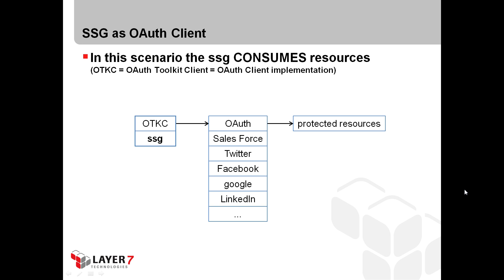If the gateway should consume an OAuth-protected resource, this can be implemented using the OAuth client assertion or the OAuth Toolkit client. The idea is to consume protected resources hosted on Salesforce, Twitter, Facebook, or some other platform. Since the gateway provides this feature, I'd like to show you how simple it is to implement an OAuth 2 client.